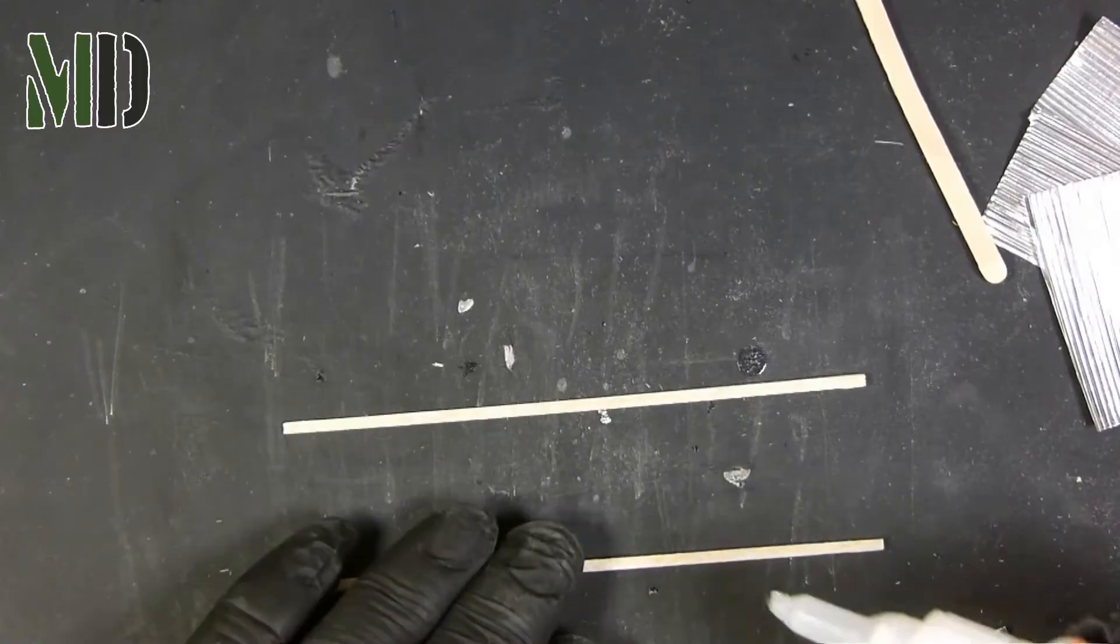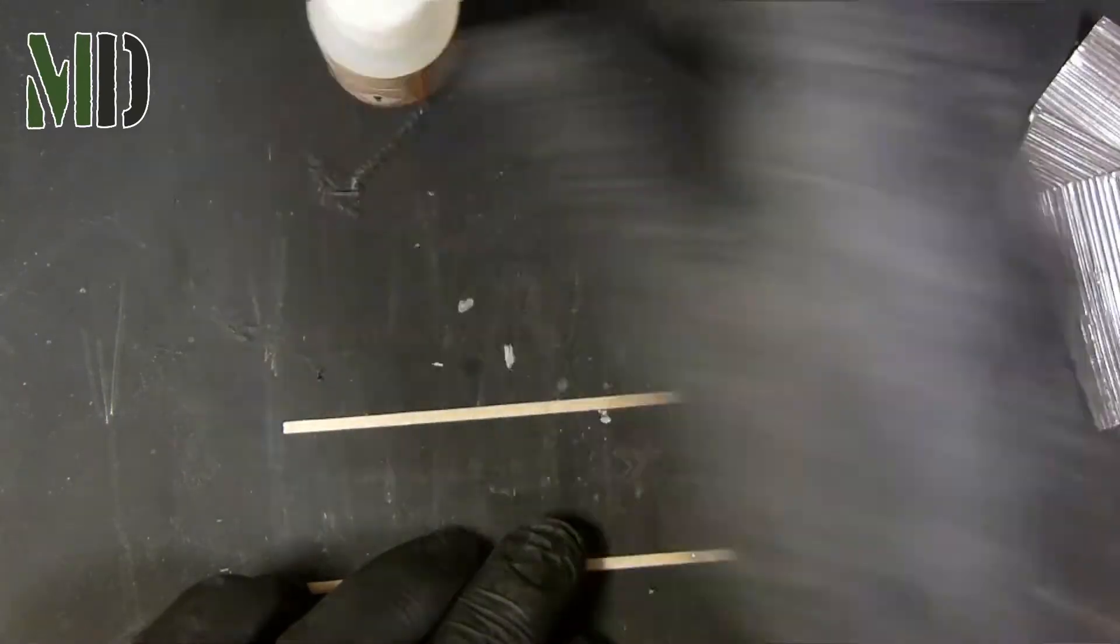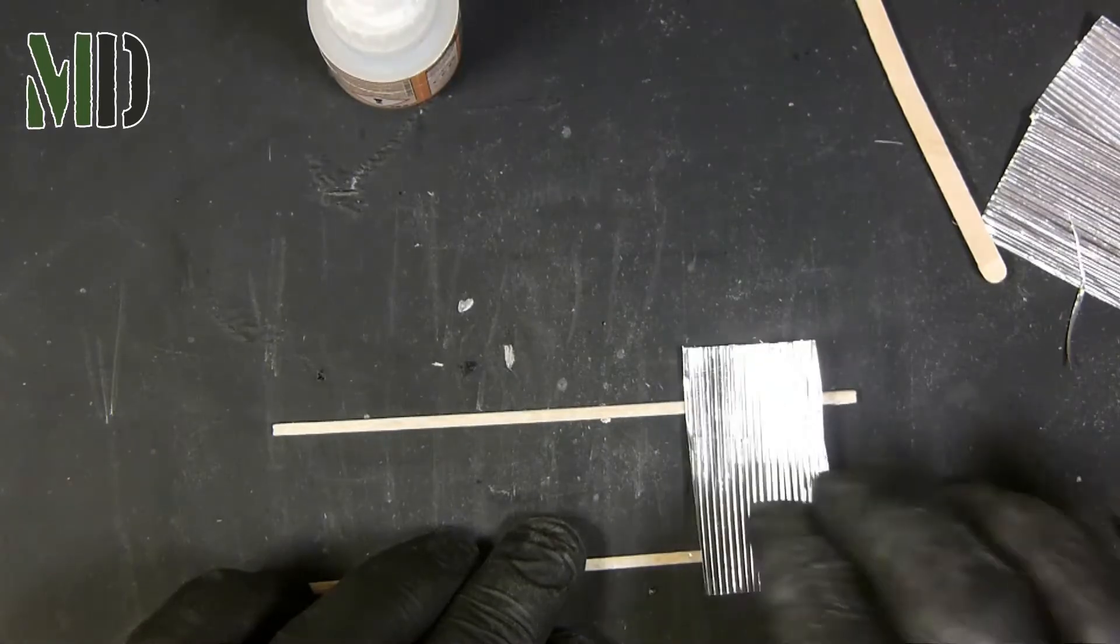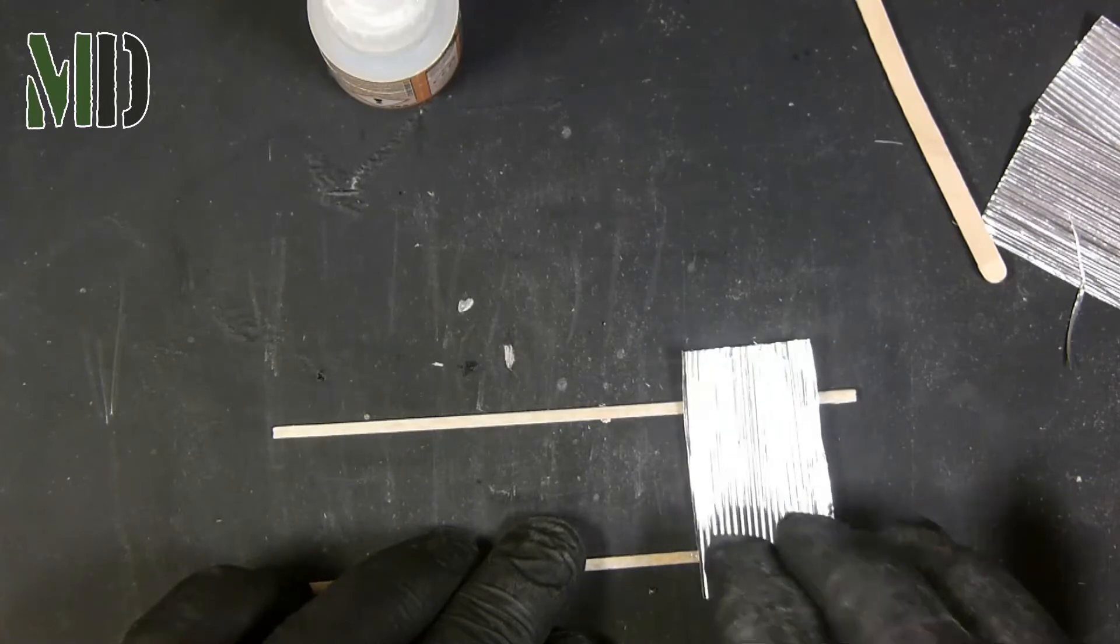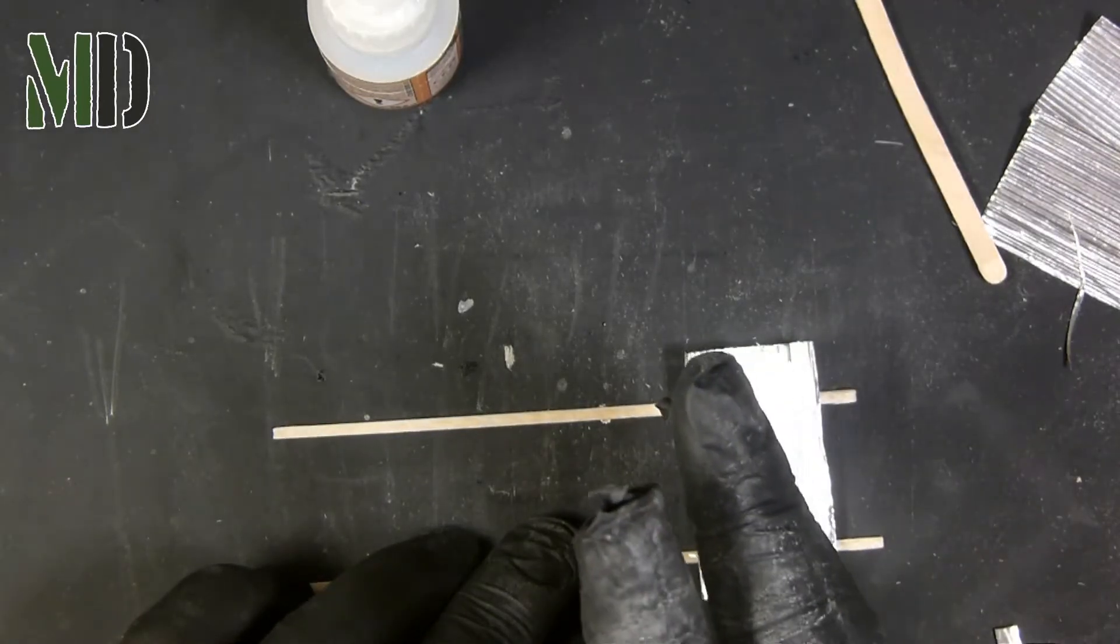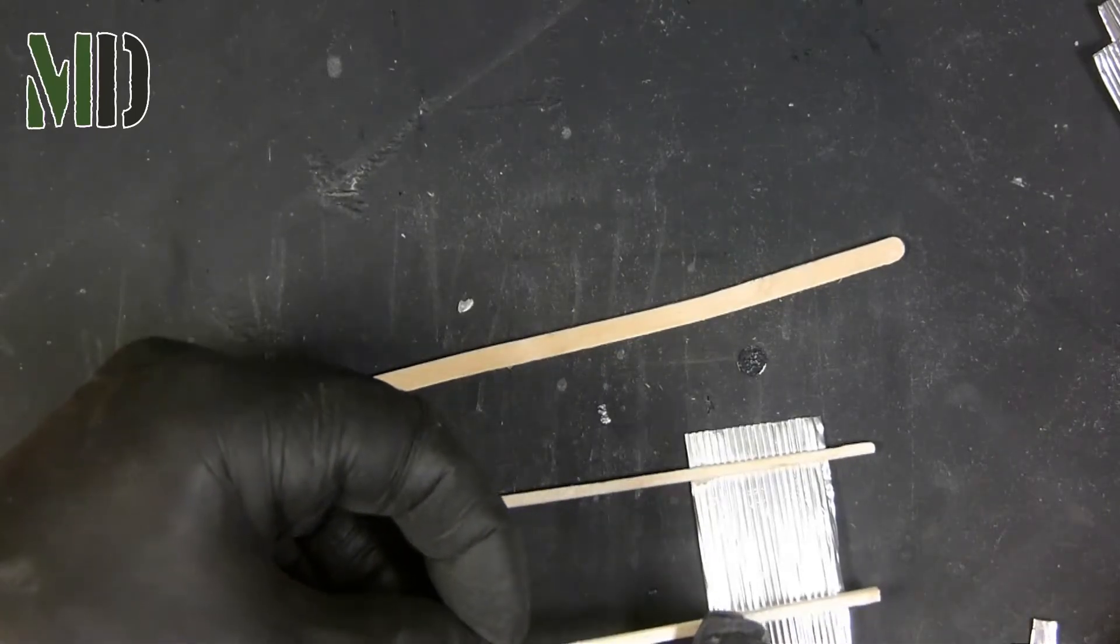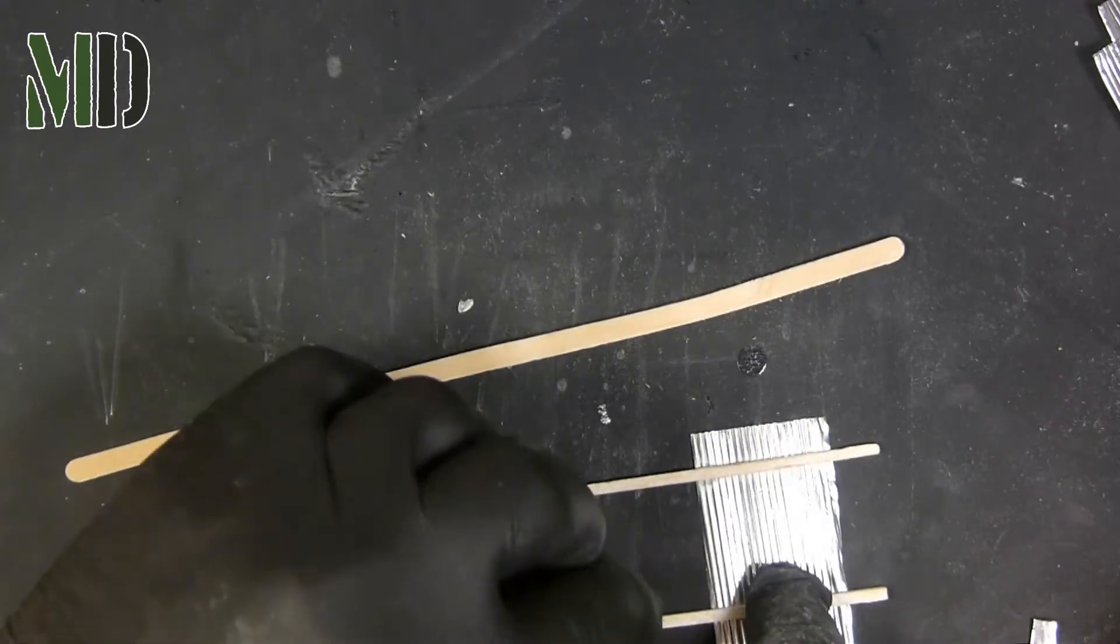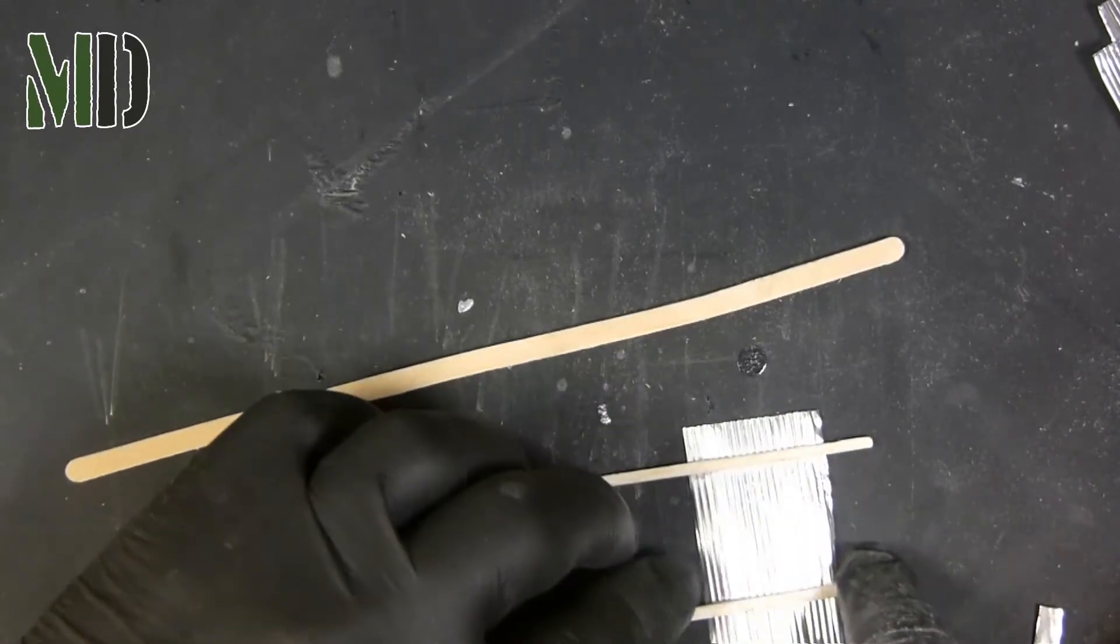Once I've done the sheets of corrugated steel, I attach these to some balsa battens, just using super glue again. I just use two battens, one for the top, one for the bottom, and just give them a little bit of an overlap as well, the sheets that is. Just be careful not to flatten out the corrugated texture when you're pushing down the battens.